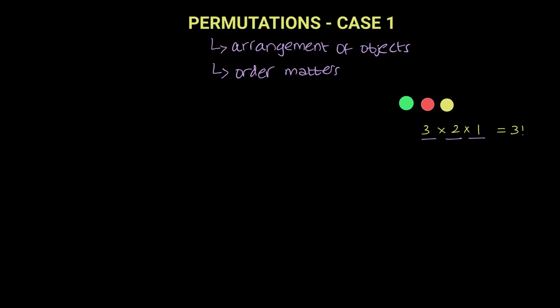So if you want to look at the general form, the general form of arranging n different objects, it is simply n factorial.